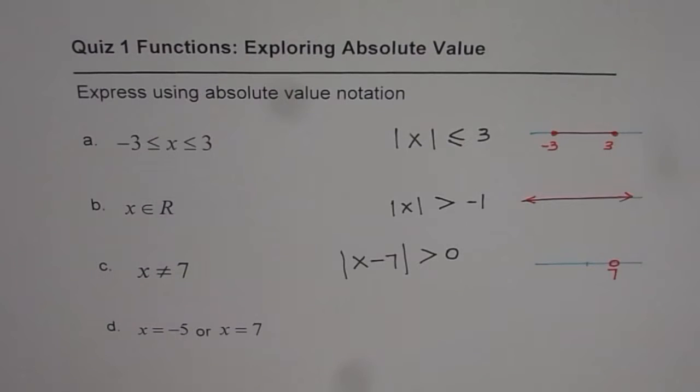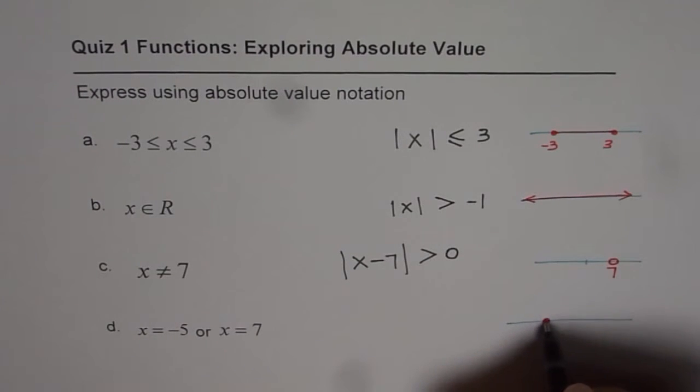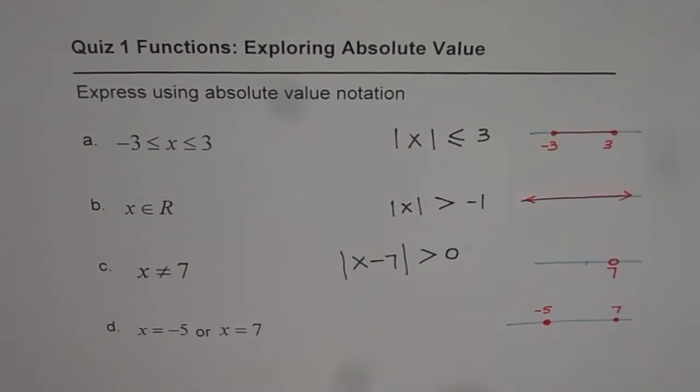Now, here is the last one. We have x equal to minus 5. Let's say, this is minus 5. And we have x equals to 7. So, in this case, we have to write this situation as an absolute, in absolute notation. How are you going to do it?